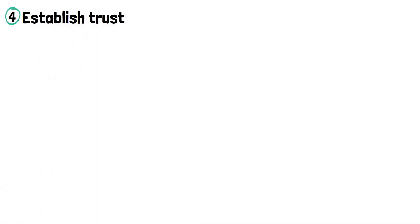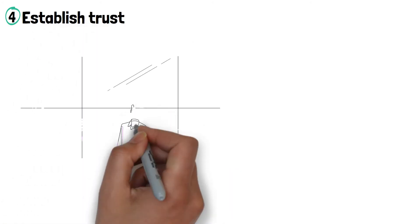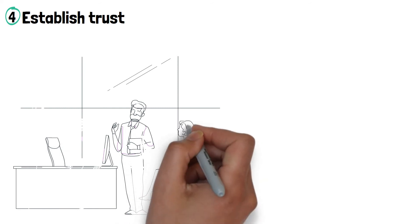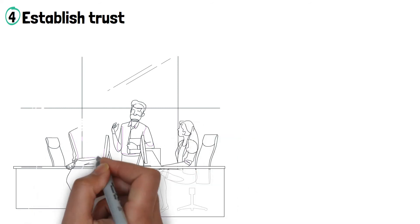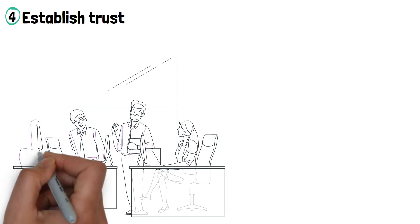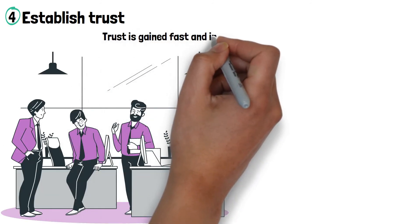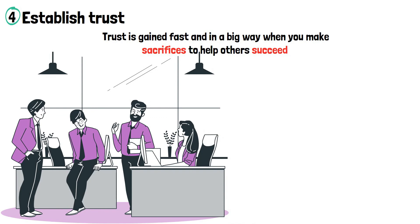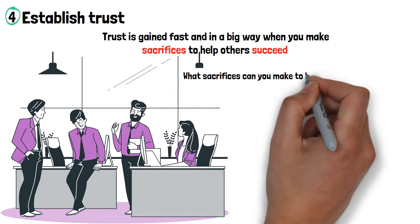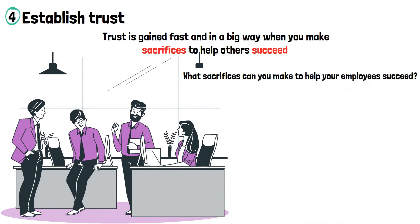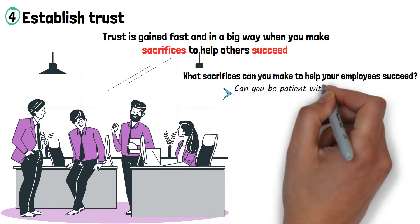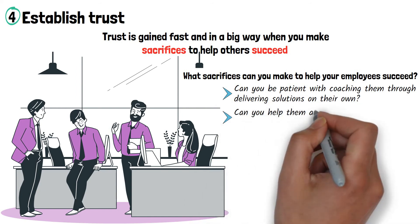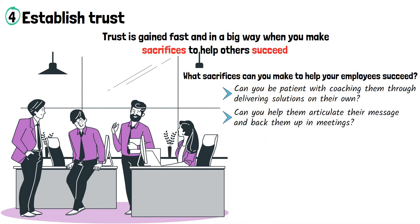Number four: Establish trust. Establishing trust is paramount for any manager, but more so when you are new. When you are new, don't try to play a hero, but rather a sidekick. Trust is gained fast and in a big way when you make sacrifices to help others succeed. What big and small sacrifices you can make to help your employees succeed. Can you be patient with coaching them through delivering solutions on their own? Can you help them articulate their message and back them up in meetings?